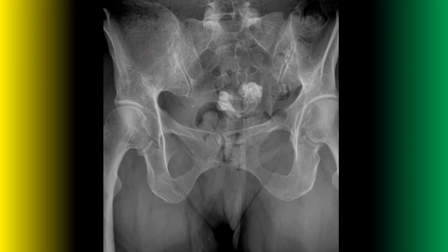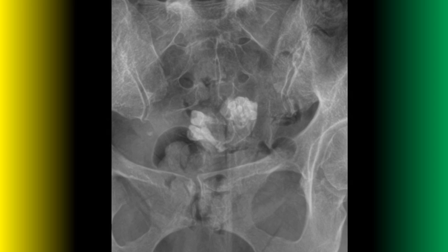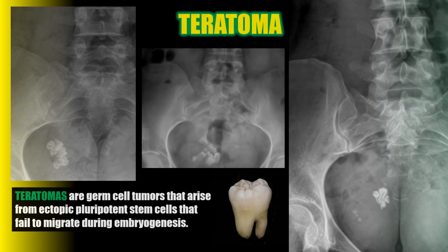On this pelvic radiograph there appears to be a mass-like soft tissue calcification within the pelvic basin — your first thought should be a fibroid or leiomyoma. However, when we zoom in, this lesion almost looks like teeth, and that's because this represents a teratoma. Teratomas are germ cell tumors arising from ectopic pluripotent stem cells that fail to migrate during embryogenesis — yes, these are teeth growing in the wrong location.